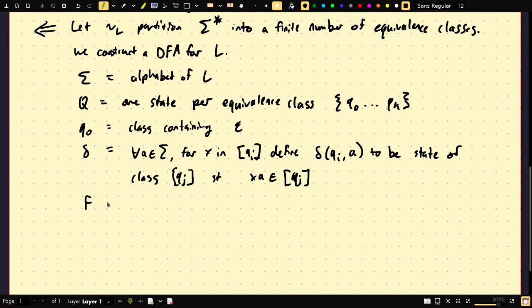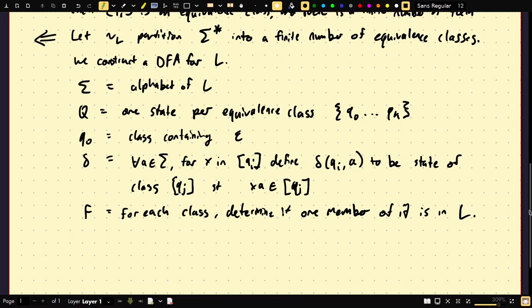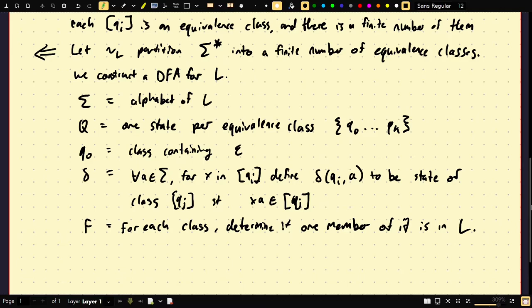And then finally, for each class, determine if one member of it is in L. That's enough. If one member of the class is in L, then the whole thing is in L. The whole class is in L, right, by this construction. So this is a DFA. It's well-defined. You can imagine that this is how you would build the DFA from the equivalence classes and the equivalence classes from the DFA.